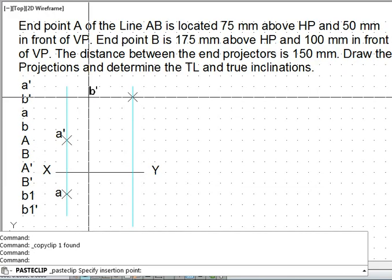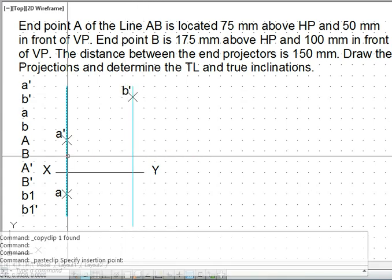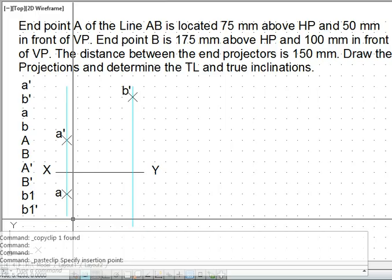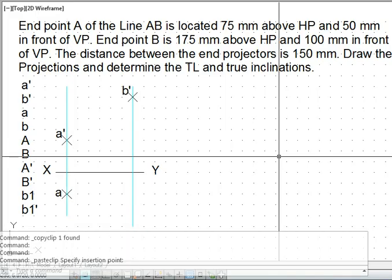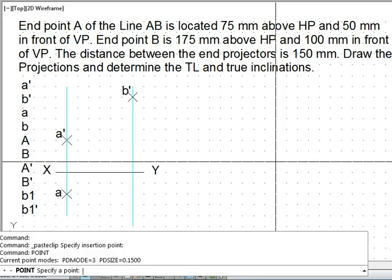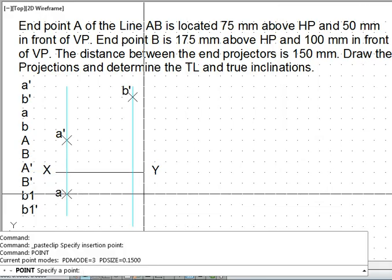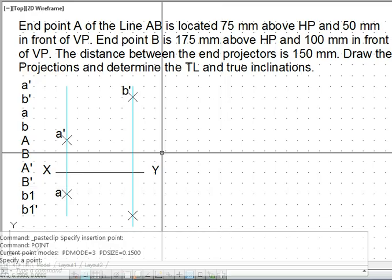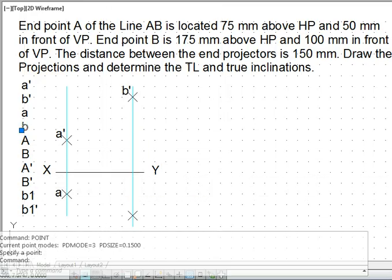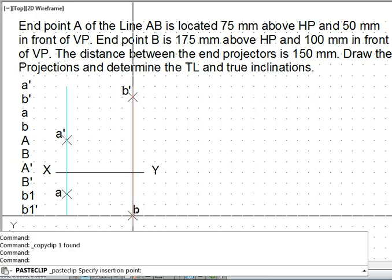We pick the B dash point from here and we locate point B dash. And it is 100 mm in front of VP. That is 100 mm in front of VP means it will be below XY line, 4 grid spaces below XY line. So this is point B. That is how we locate it.